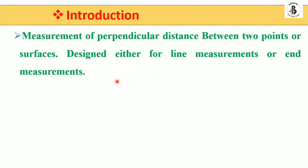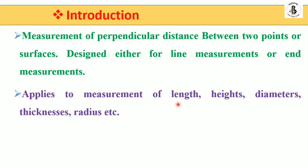In the case of linear measurements, this is basically the measurement of perpendicular distance between two points or two surfaces, depending upon the object. It is designed either for line measurement or for end measurements. It applies to the measurement of length, height, diameters, thickness, and radius — whatever is concerned according to the shape of the object. So it will be directly measured or sometimes indirectly measured.